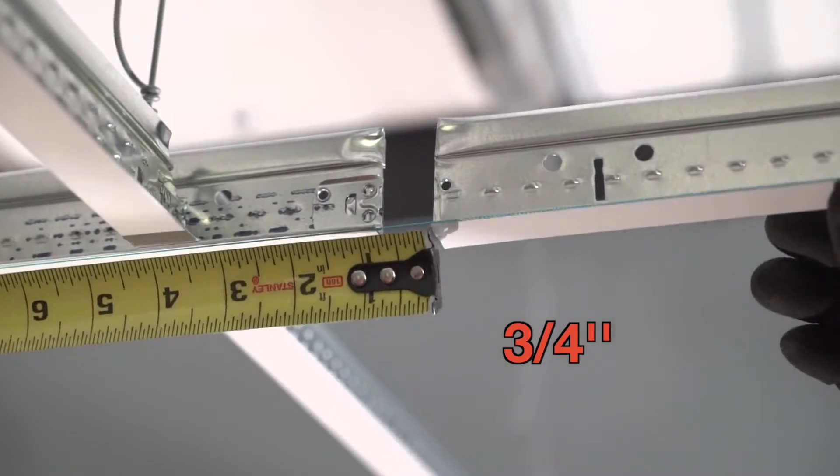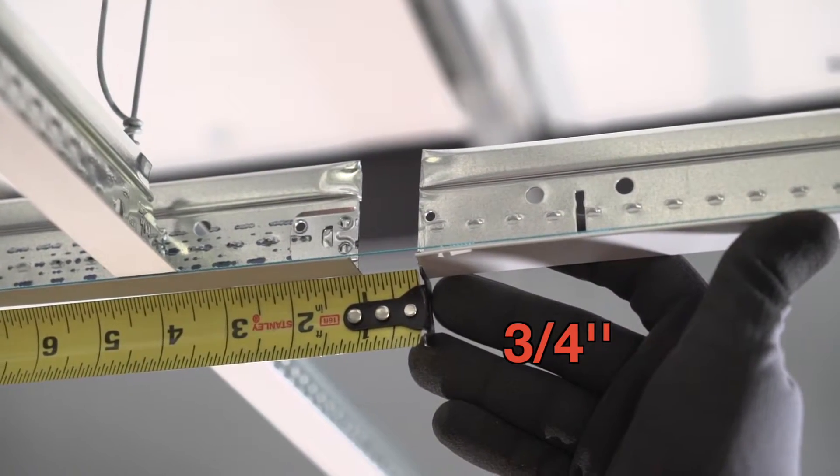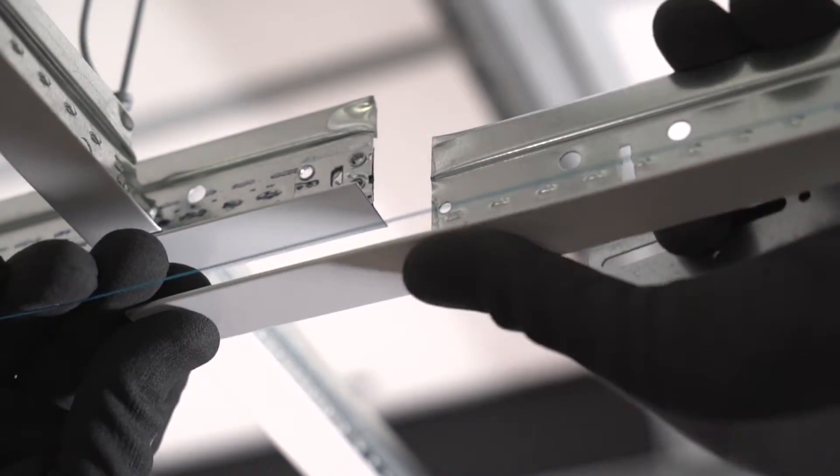If you made your cuts right, you should have 3-quarter inch clearance between both main tees now. To cover up that 3-quarter inch gap...